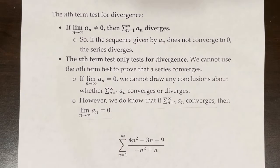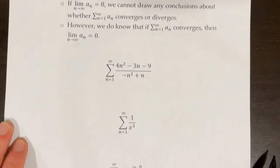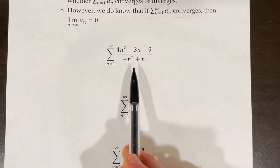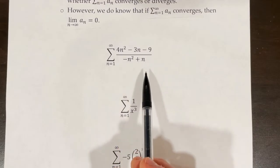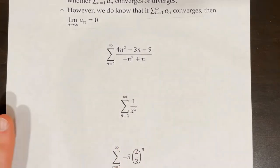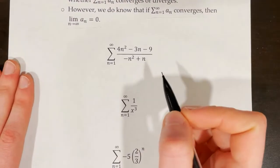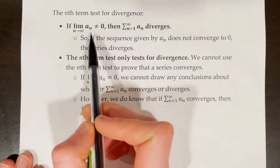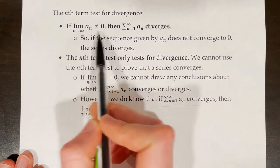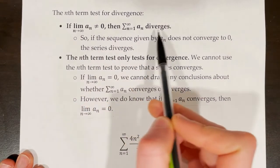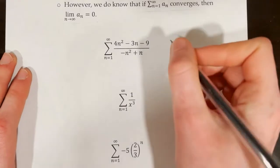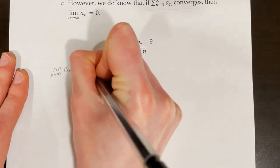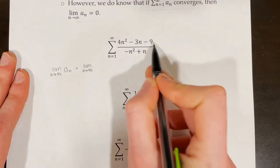Let's take a look at some examples with the nth term test. We have the series from n equals 1 to infinity of 4n squared minus 3n minus 9 over negative n squared plus n, and we're trying to figure out if it converges or diverges. We take the limit as n approaches infinity of a sub n, which is that expression.